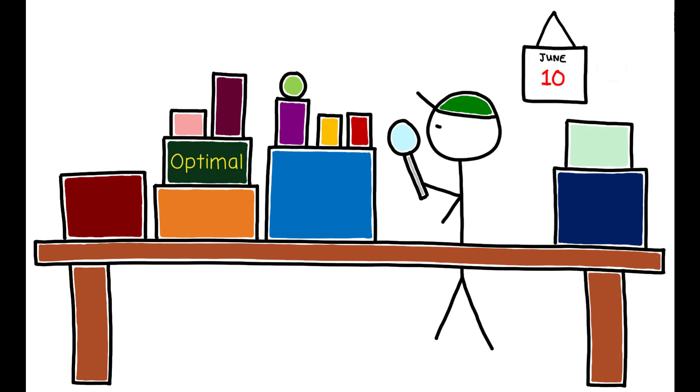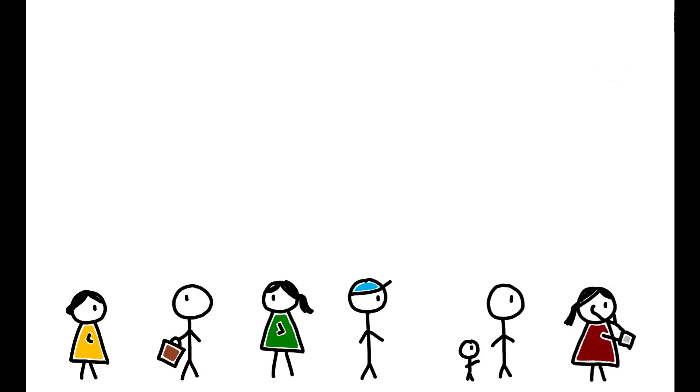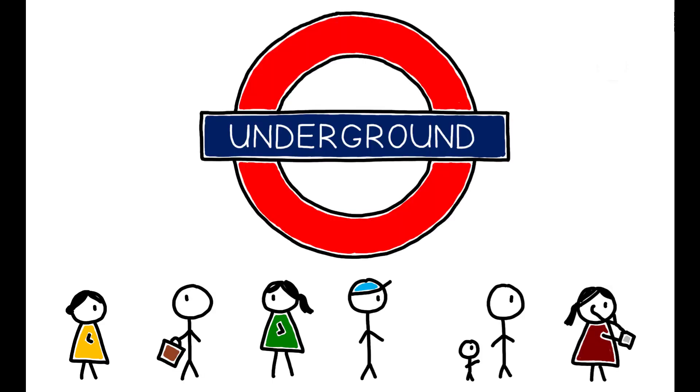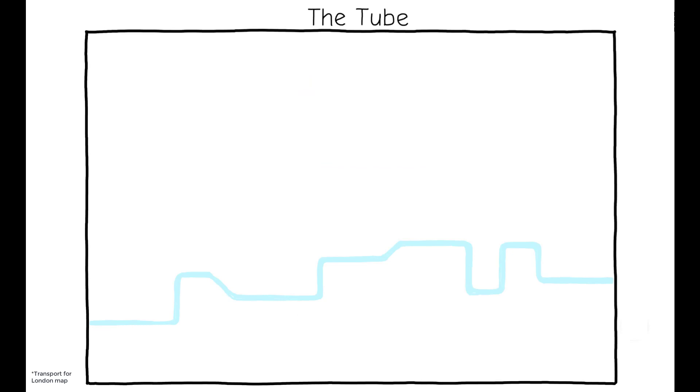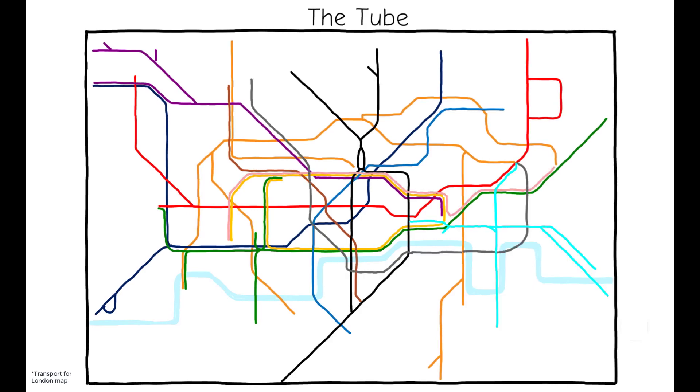To examine these questions, the authors study how commuters adjusted their behavior following a two-day strike on the London Underground Transportation System, also known as the Tube. Over the period covered in this paper, the Tube network consisted of 11 different lines connecting 270 different stations over 400 kilometers of track. It serves a daily ridership of up to 4 million passenger journeys and is a central mode of transportation for many people living and working in London.